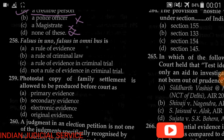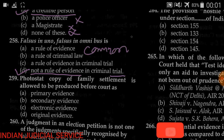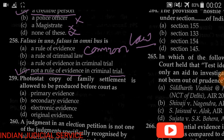Question number 258: Falsus in omnibus is — (A) a rule of evidence, (B) a rule of criminal law, (C) a rule of evidence in criminal law, (D) not a rule of evidence in criminal trial. The answer is option D — it is not a rule of evidence in criminal trial; it is a rule of common law. It means that when a witness gives false evidence once, there is a probability they will give false evidence again, making their credibility doubtful — and in criminal proceedings, any doubt means conviction is not possible.